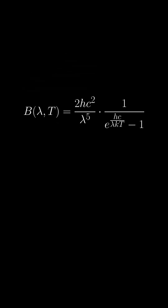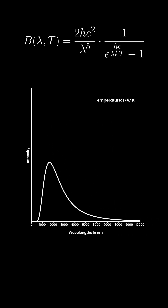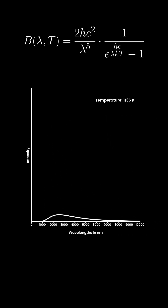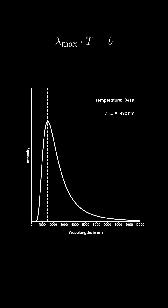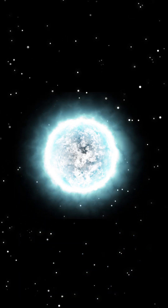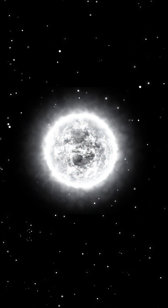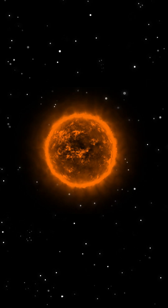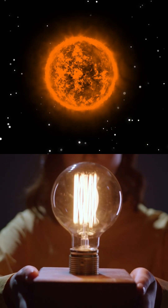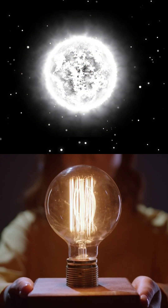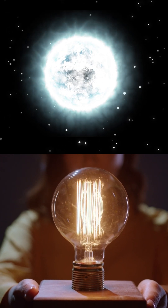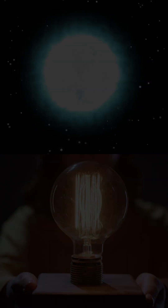According to Planck's law, the spectral distribution of emitted radiation is determined by temperature, and Planck's law further relates temperature with the maximum emission. Common examples of blackbodies include stars, whose luminosity and color depend on their surface temperatures, and light bulbs that glow due to the electric current that heats up the tungsten filament inside.